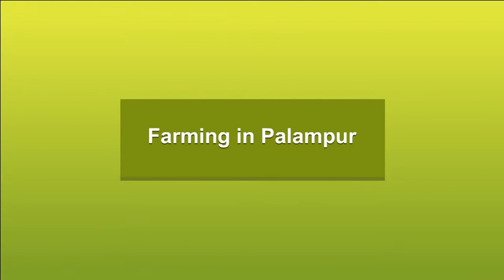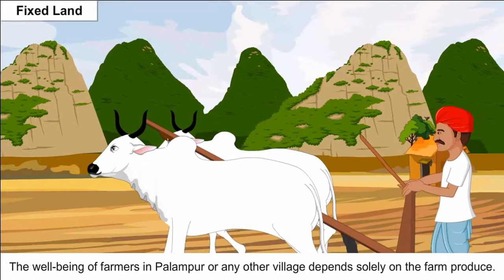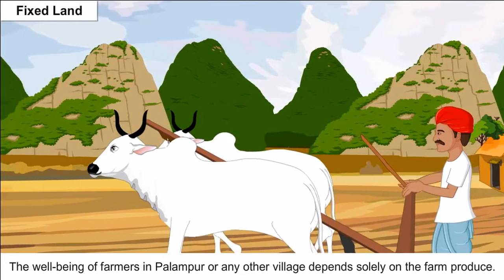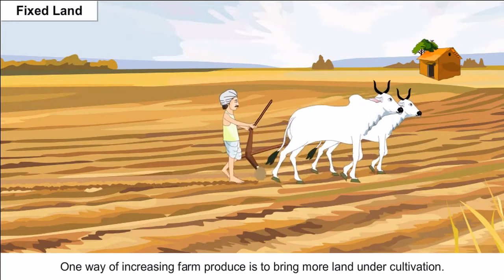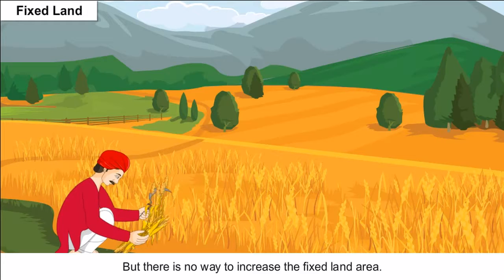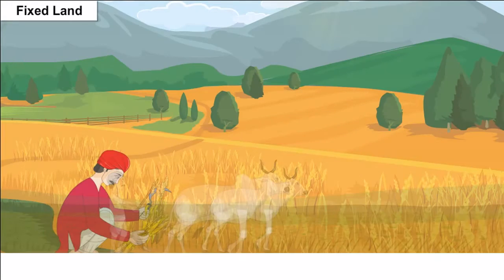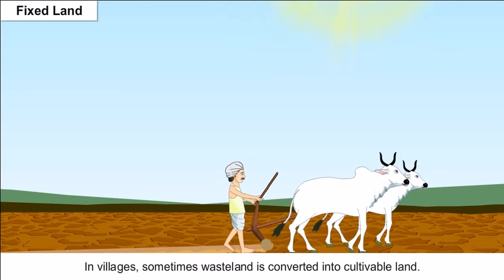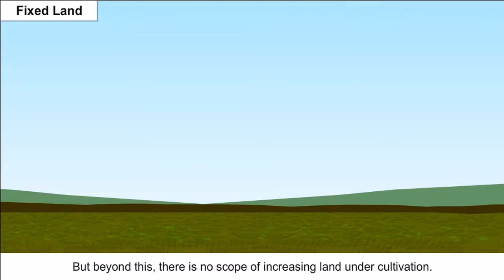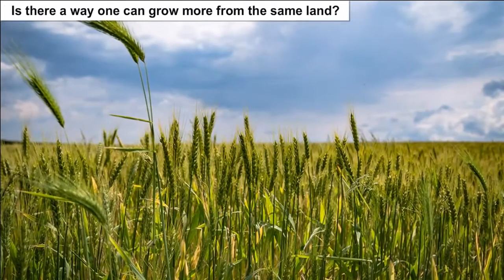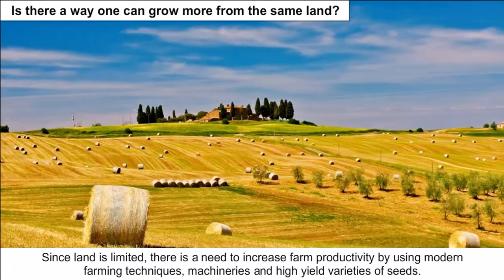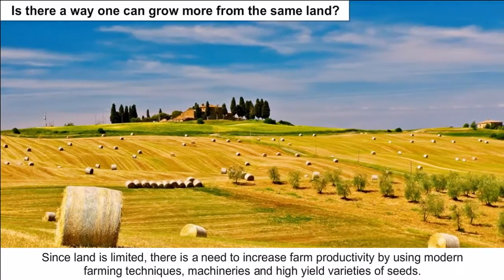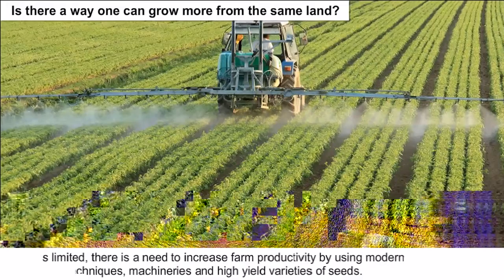Farming in Palampur — Fixed Land: The well-being of farmers in Palampur or any other village depends solely on the farm produce. One way of increasing farm produce is to bring more land under cultivation, but there is no way to increase the fixed land area. In villages, sometimes waste land is converted into cultivable land, but beyond this there is no scope of increasing land under cultivation. Since land is limited, there is a need to increase farm productivity by using modern farming techniques, machinery, and high-yield varieties of seeds.